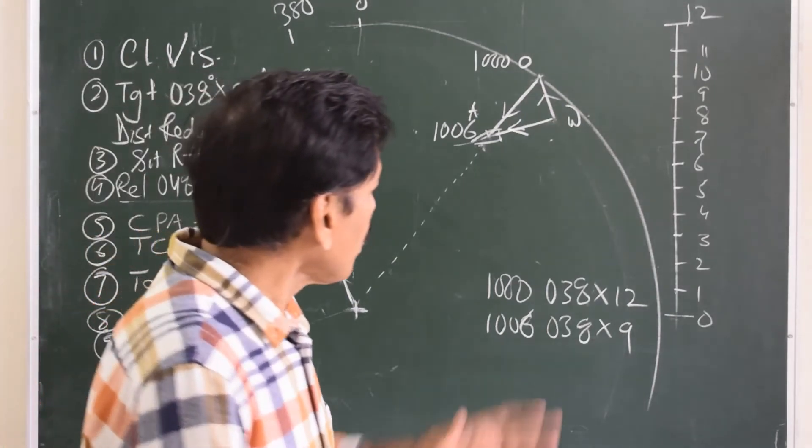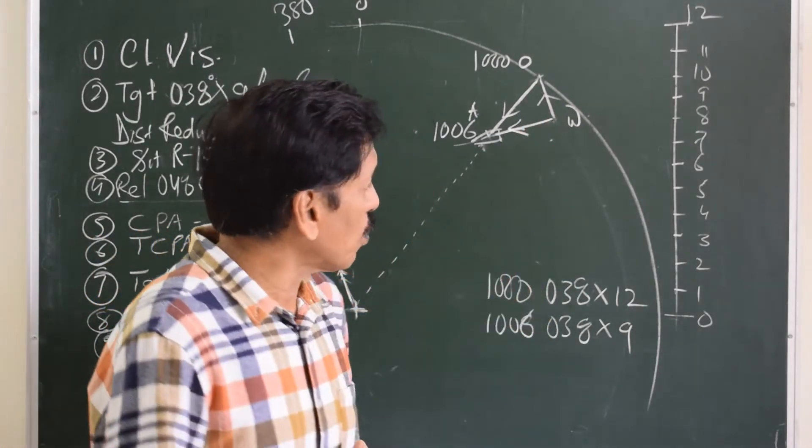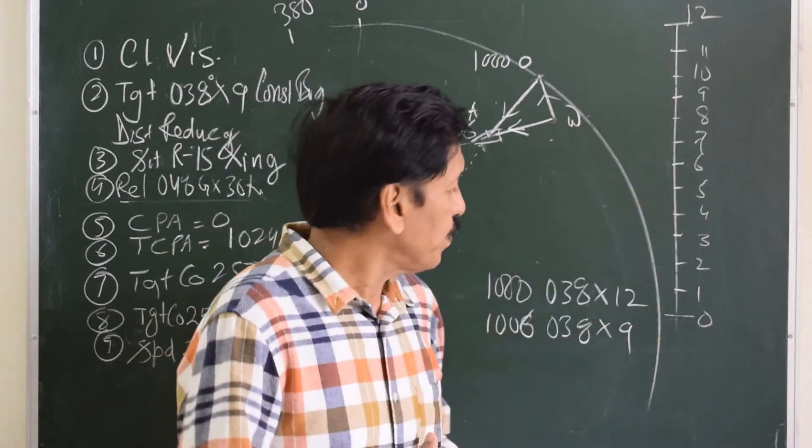Now we made this triangle. Here this triangle is of 6 minutes. Here is the scale.